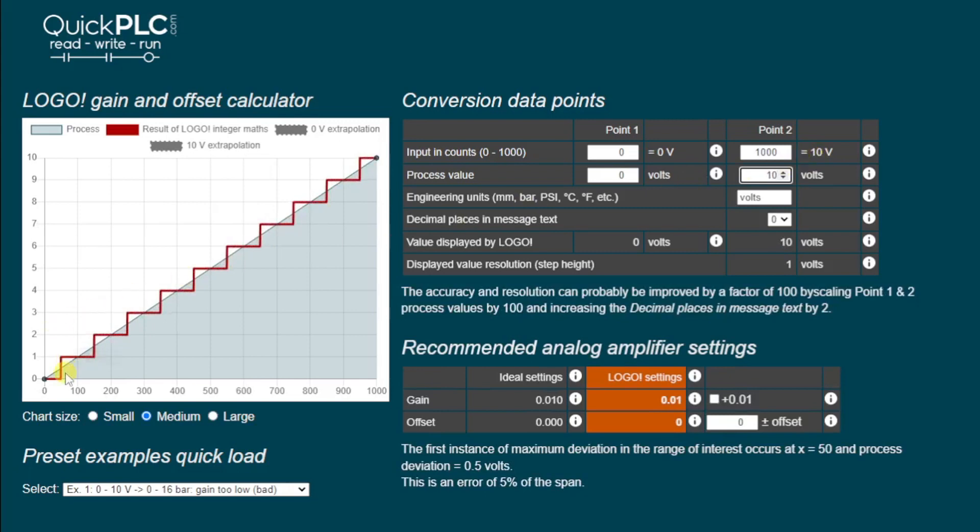But we can see a couple of problems. On the chart, we can immediately see that from zero to half a volt, it displays zero. From half a volt to one volt, it displays one. From one and a half volts to two and half volts, it displays two, etc. And that is all determined just by the gain setting here of 0.01. Once we multiply a reading such as 500 by 0.01, we'll get a reading of five with no further decimal places.